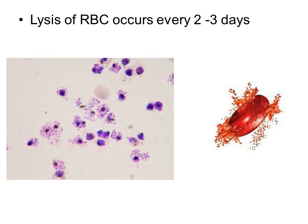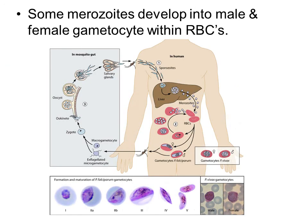Lysis of red blood cells occurs every two to three days. Some merozoites develop into male gametocytes, whereas some develop into females. Both male and female gametocytes develop inside your blood. If a mosquito bites you and sucks some of your blood, it will be infected with male or female gametocytes. Then inside of the mosquito, the union of gametes will occur — that is referred to as sexual reproduction. Asexual reproduction occurs in humans producing gametocytes, and sexual reproduction occurs in the mosquito.